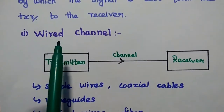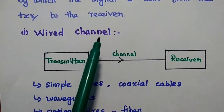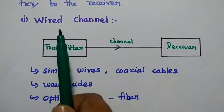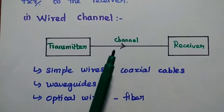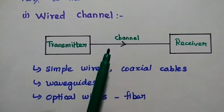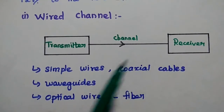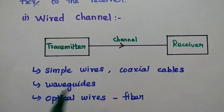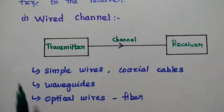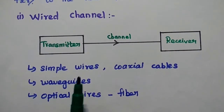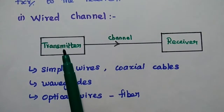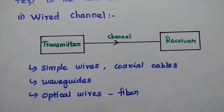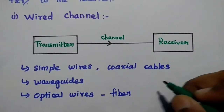One type is the wired channel, also called wired communication. In a wired channel, we use a physical communication medium — simple wires, coaxial cables, waveguides, or optical fibers. This physical medium is used to transfer information from the transmitter to the receiver. A good example of a wired channel is the telephone.